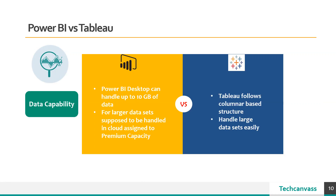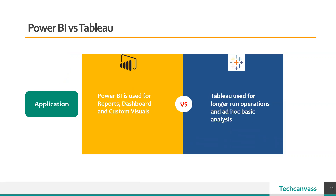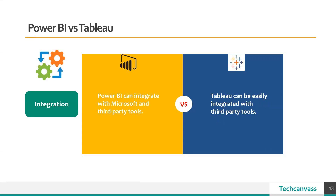Now let's discuss data capability. Power BI can handle up to 10 GB of data in the desktop version; anything beyond 10 GB needs to be uploaded to the cloud as premium capacity. If it is a local database, Power BI just pulls the data and does not import it. Tableau works in a columnar-based structure, storing only unique values per column — this is how it can fetch billions of rows. The fourth parameter is application: Power BI is used for reports, dashboards, and custom visuals, whereas Tableau is used for ad hoc analysis and long-run operations.